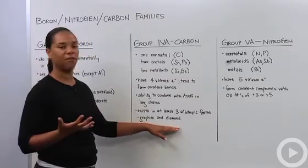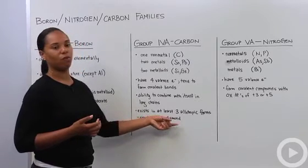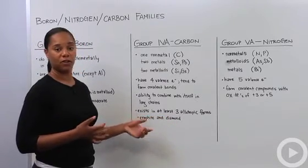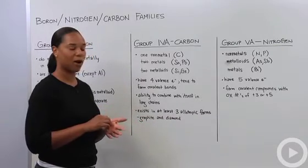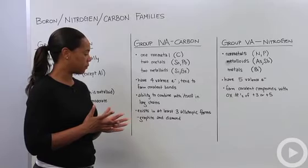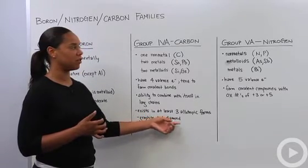Two forms here are graphite and diamond. If you think about graphite and what you know about diamonds, you'll know that the physical properties of these are pretty different. Graphite is used in pencils and it's pretty soft, whereas diamonds are one of the hardest materials in the world.